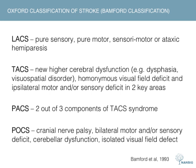Finally, posterior circulation stroke, or POCs, clinically groups together strokes involving the brainstem, cerebellum, and occipital lobes, all of which are supplied by the vertebral arteries. All of these syndromes can be used to predict prognosis and outcome. TACs have the worst prognosis in terms of mortality, whereas PACs are the biggest predictor of recurrent strokes.